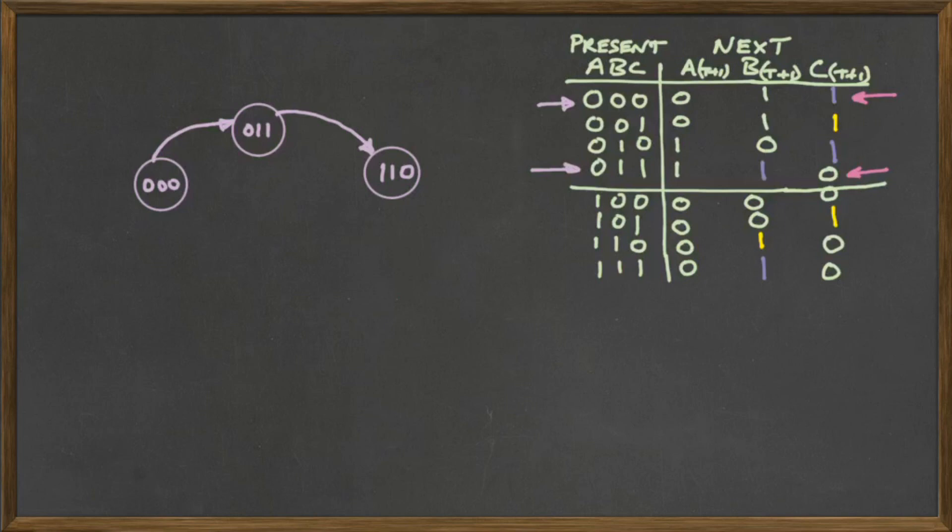We now move to the 3. We don't move to the 1. We move to the 3. And we see that the 3 transitions to 6: 1,1,0, which is 6. So we just draw one more state and we put an arrow going to it so that shows that the 3 is going to the 6.